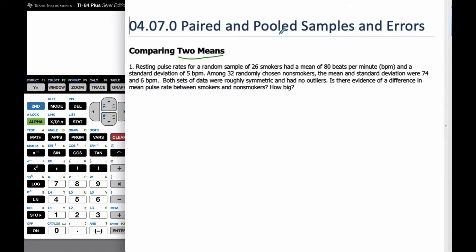Comparing two means, if we consider this problem: resting pulse rates for a random sample of 26 smokers has a mean of 80 beats per minute and a standard deviation of 5. Among 32 randomly chosen non-smokers, the mean is 74 and the standard deviation is 6. Both sets were roughly symmetric and had no outliers, so we can assume the central limit theorem. Is there evidence of a difference in the mean pulse rate between smokers and non-smokers, and if so, how big?